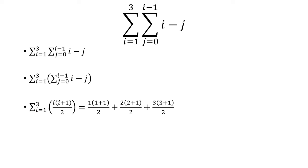So first plug in i equals 1. We have 1 times the quantity 1 plus 1 over 2. When i is 2, it's 2 times 2 plus 1 over 2. i is 3, 3 times 3 plus 1 over 2.